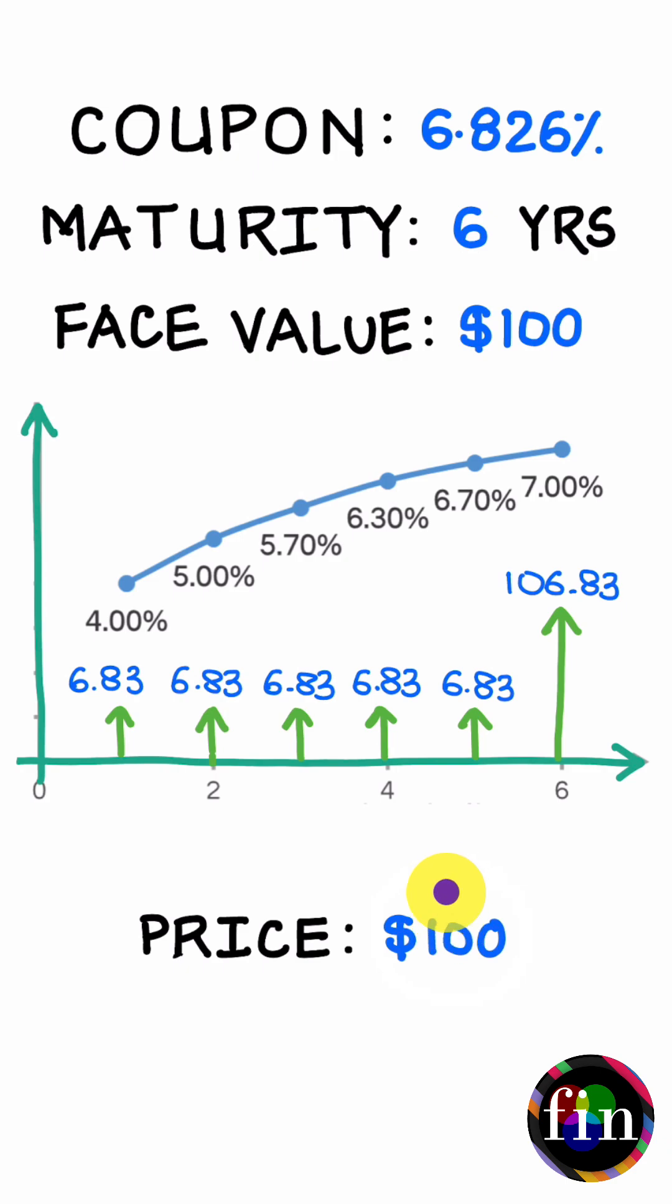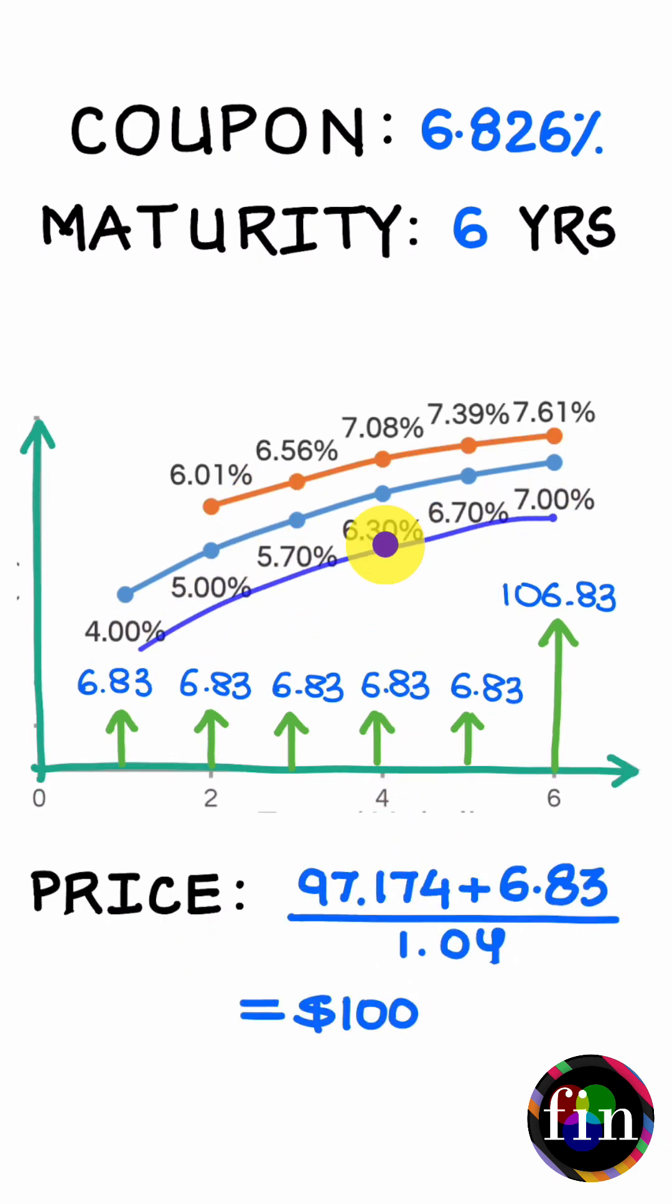I can do this valuation also by first implying from my spot rates a term structure of forward rates for periods all of which start one year from today. If I were to make this assumption that these forward rates after one year become the spot rates, then using this assumed term structure of spot rates I can discount the remaining cash flows.